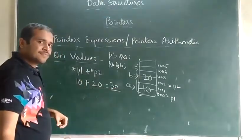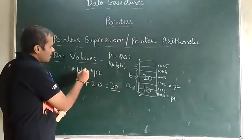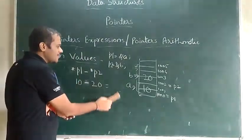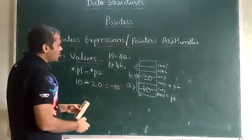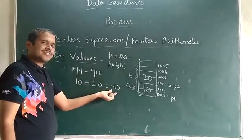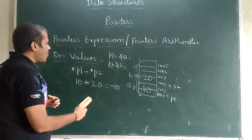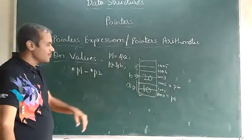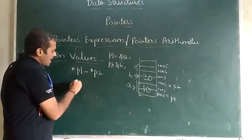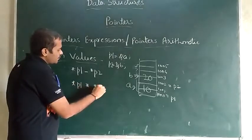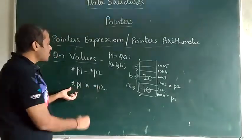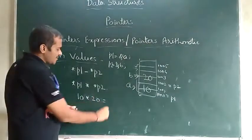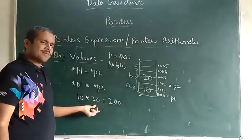For subtraction on values: star p1 minus star p2 gives minus 10. If you do star p2 minus star p1, the output is 10 — a valid integer. For multiplication: star p1 into star p2 is 10 into 20 equals 200. No problem there.